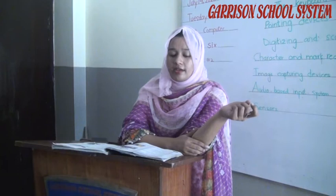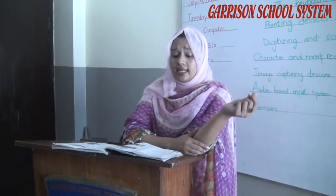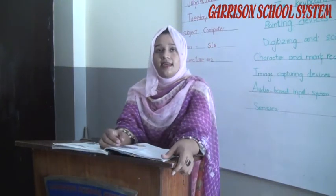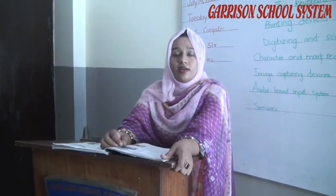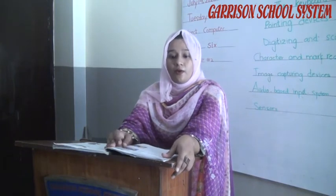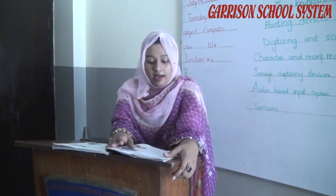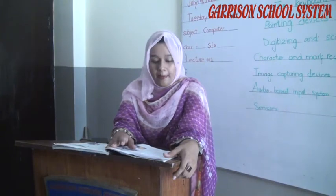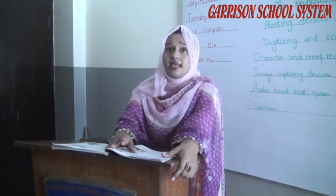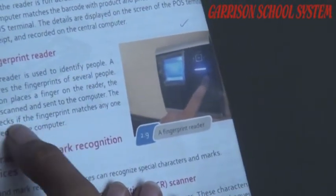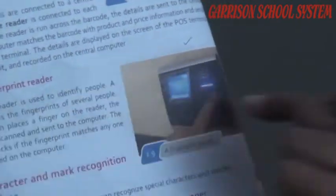Point-of-sale (POS) terminals are connected to central computers. When a barcode is scanned, the information is sent to the central computer. A fingerprint reader is used to identify people, such as marking attendance in schools or verification at banks. When a person places a finger on the reader, the fingerprint is scanned and sent to the computer. The computer checks if the fingerprint matches any stored on record. If matched, access is granted; otherwise other options are given.